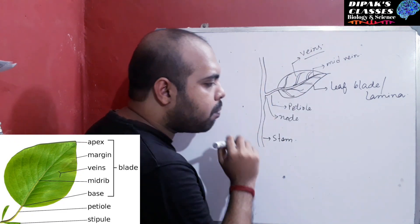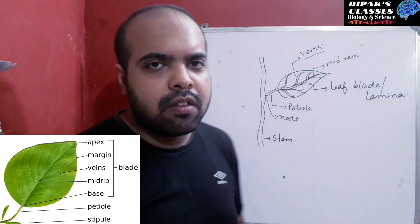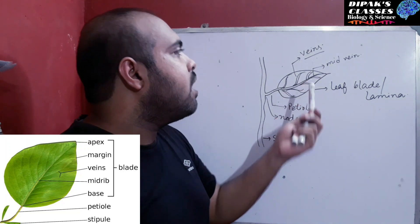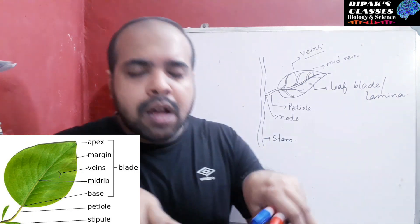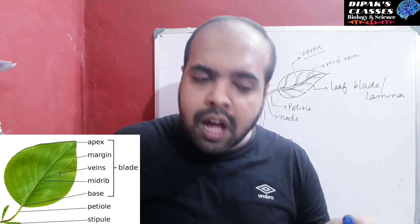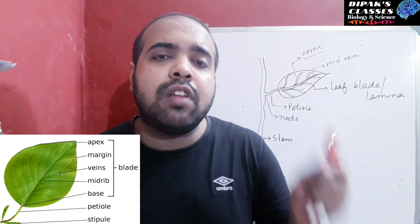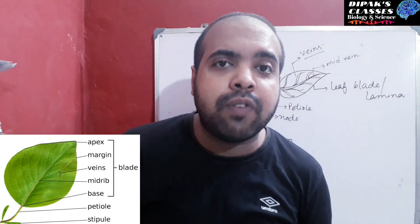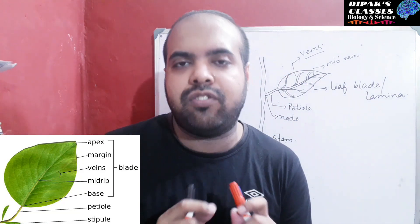These are the basic portions of a typical leaf. The veins emerging from the mid vein are present in the leaf in a wave-like fashion. Depending on the pattern by which the veins are arranged throughout the leaf is known as venation. Venation is the pattern by which the veins are arranged in the leaf.